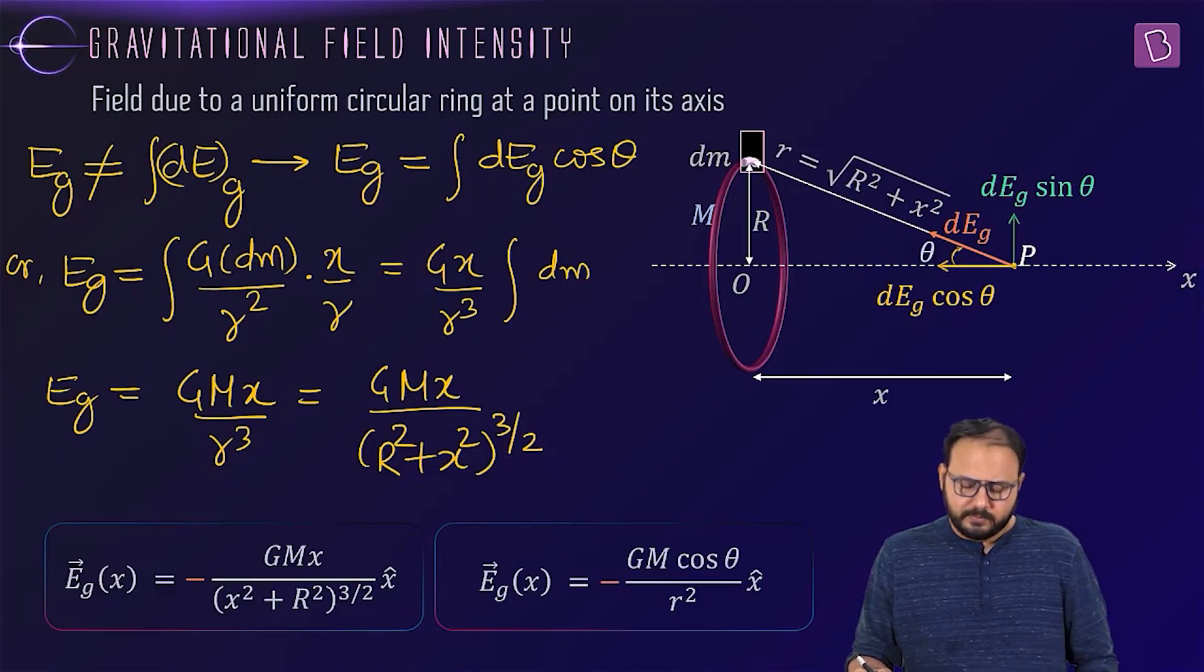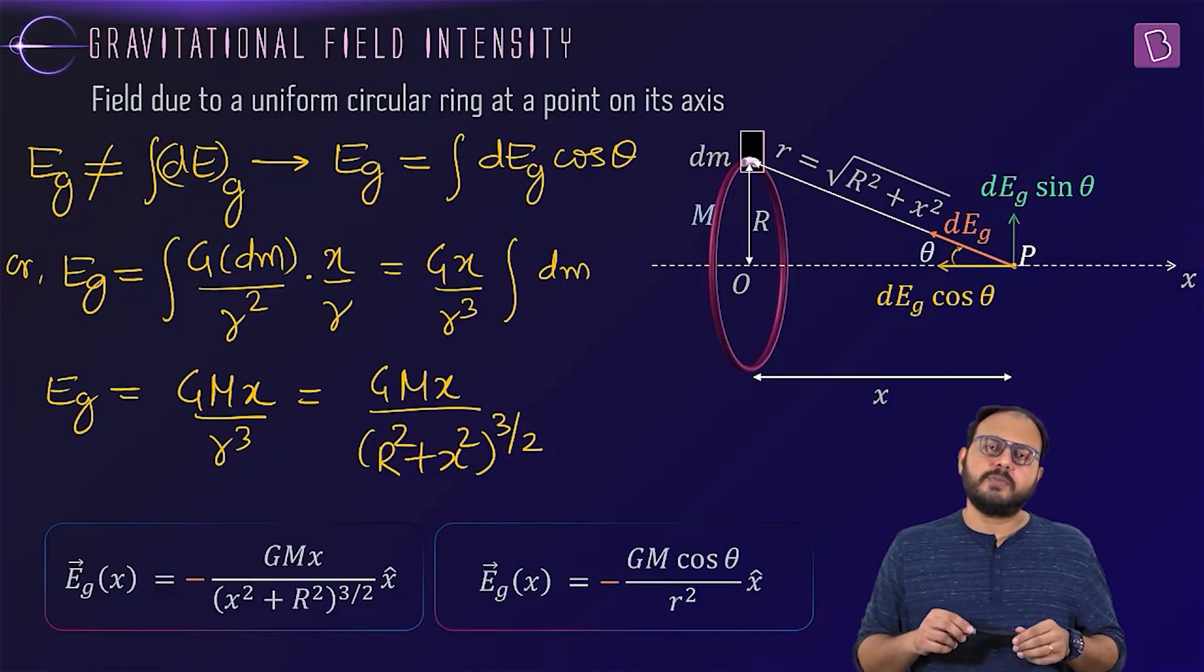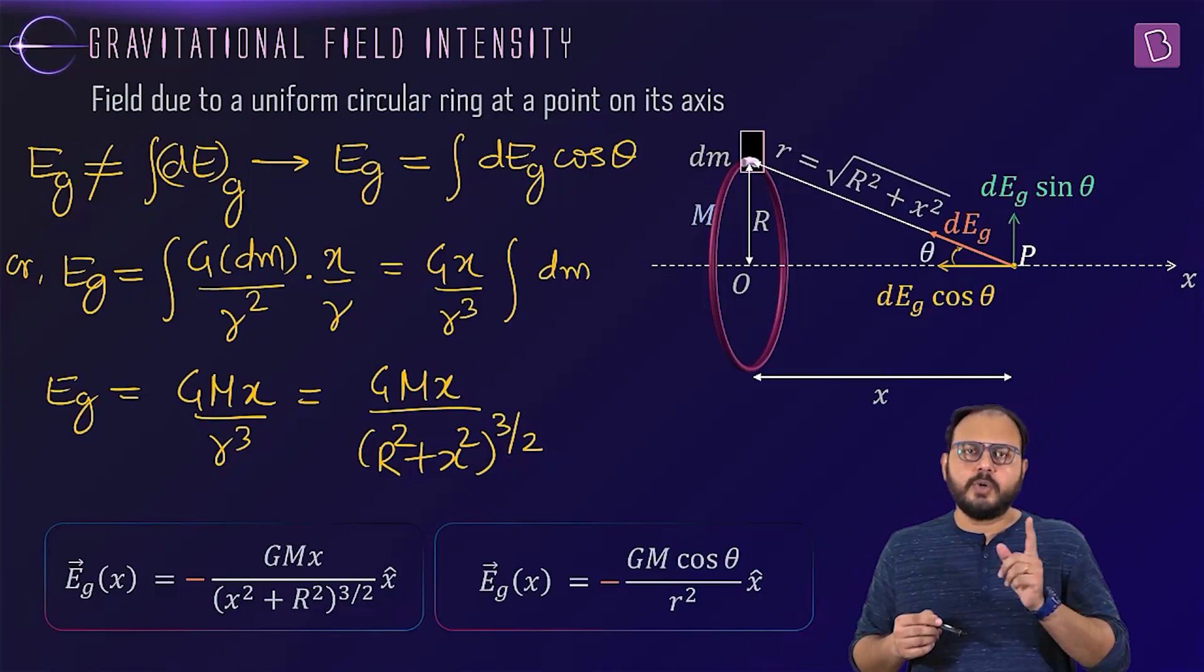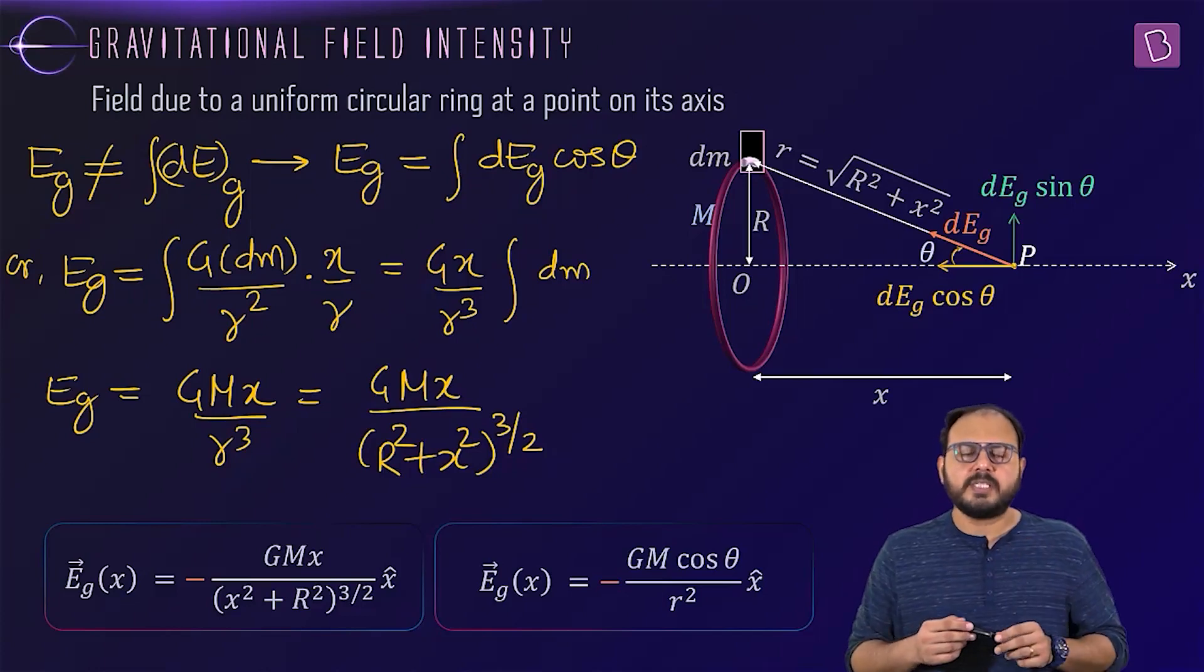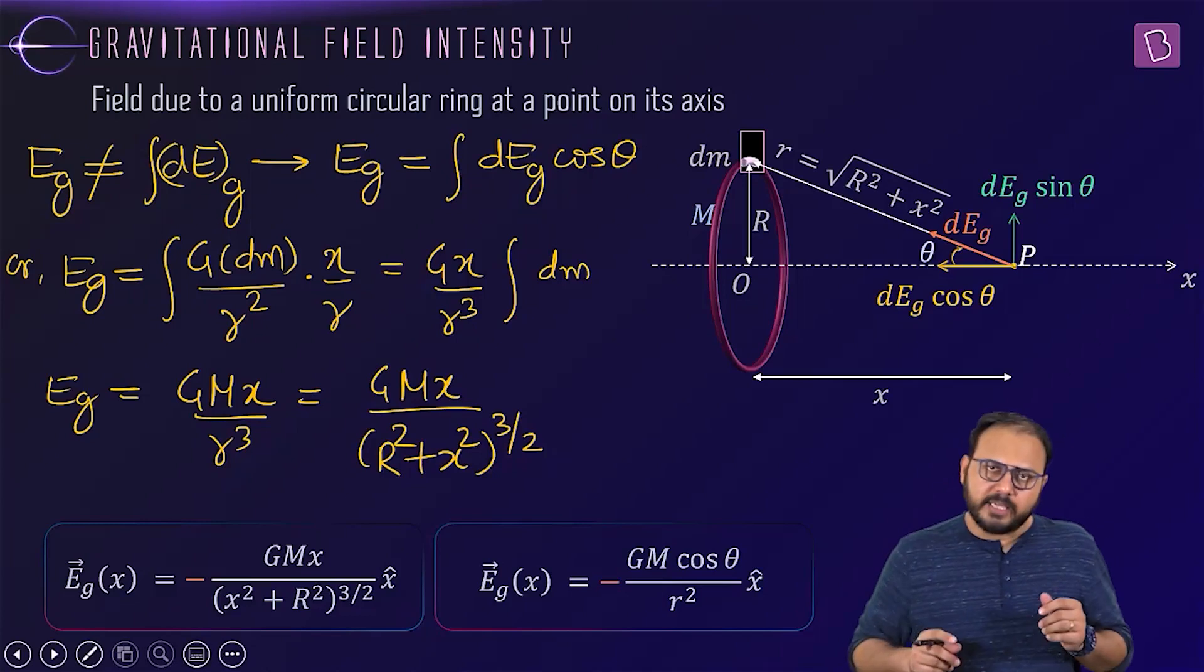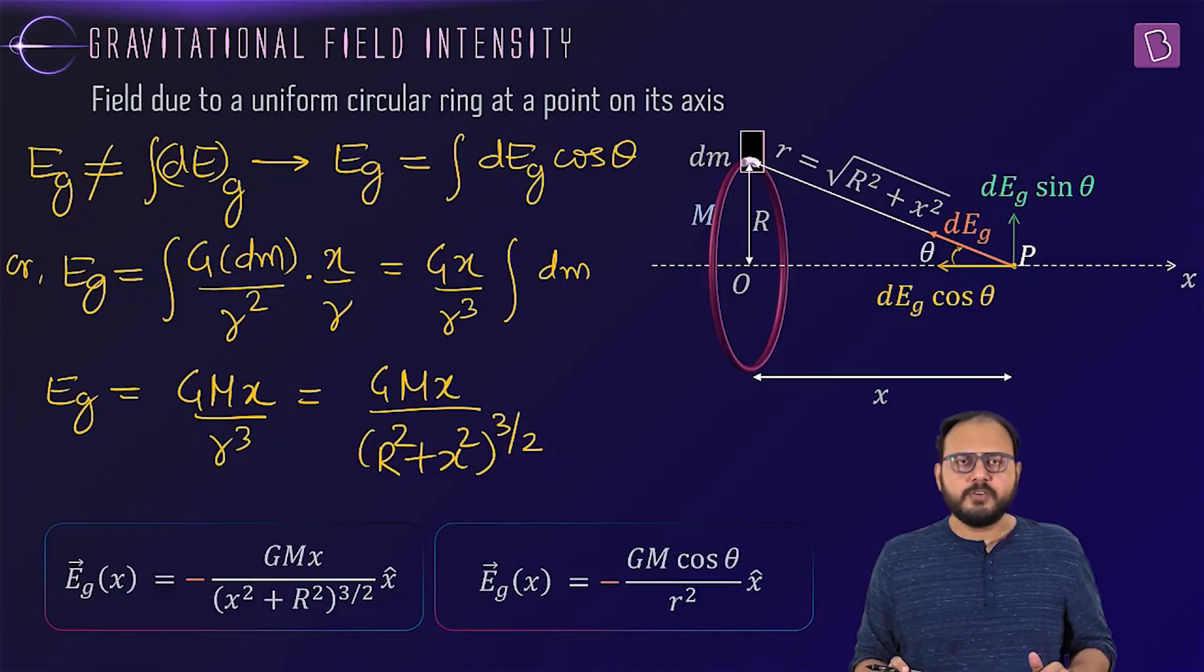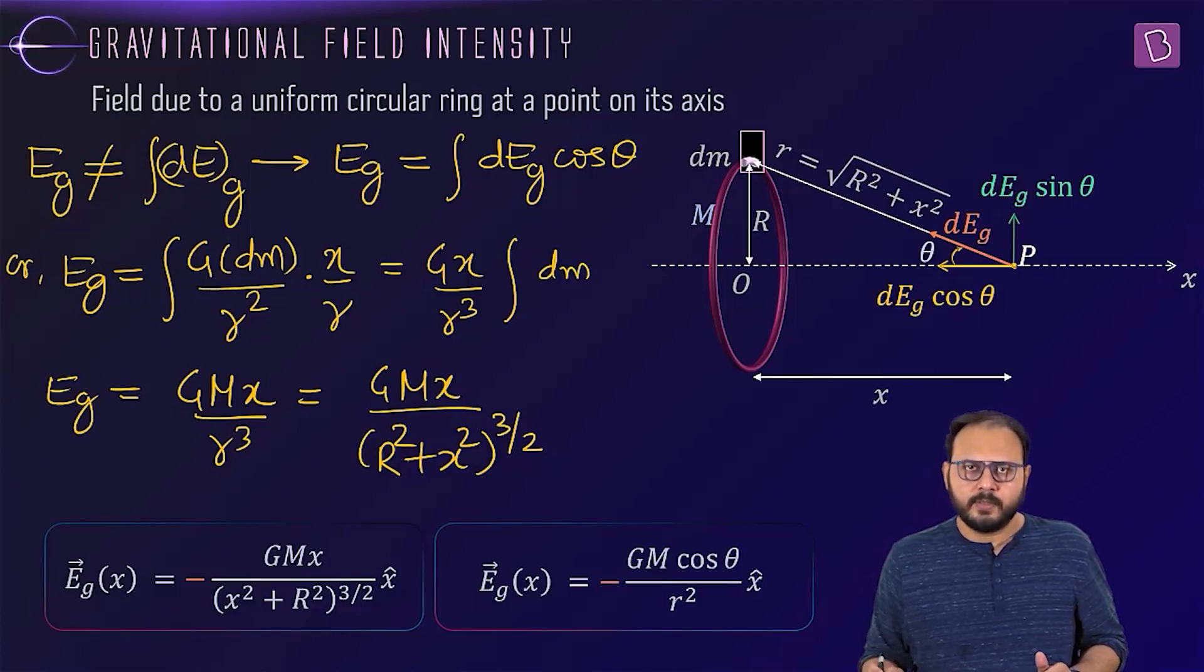Now tell me. gmx upon r square plus x square 3 by 2. kqx upon r square plus x square 3 by 2. Do you trust me now? Are we seeing a deja vu? Almost deja vu. Right?